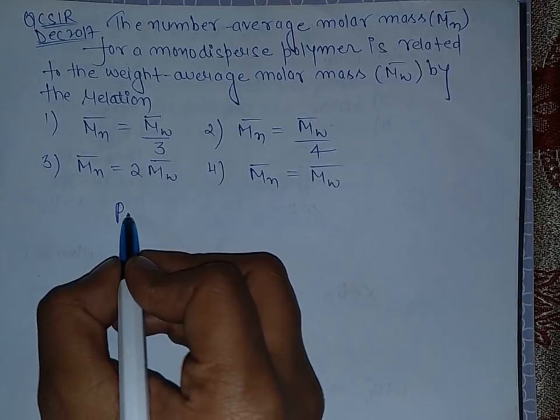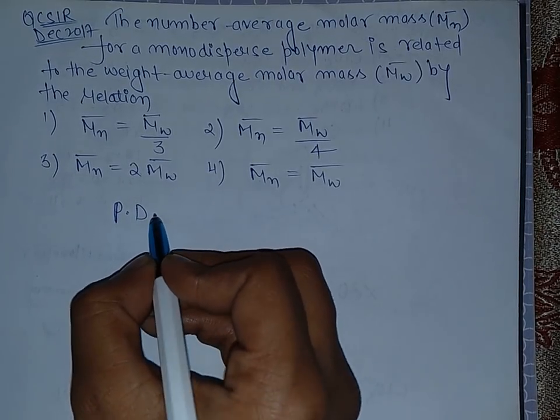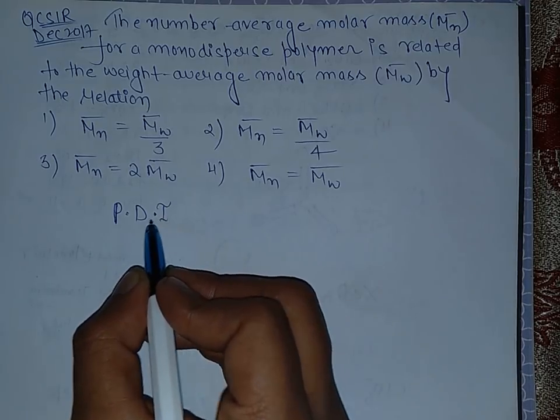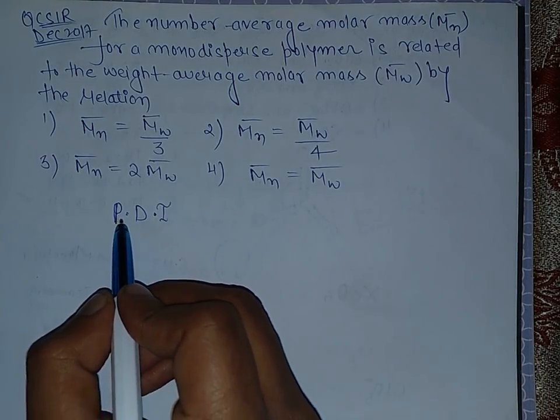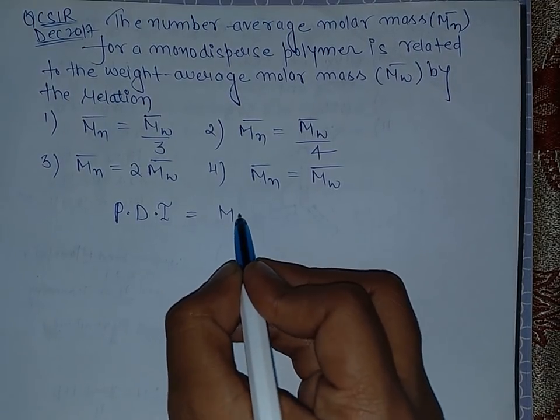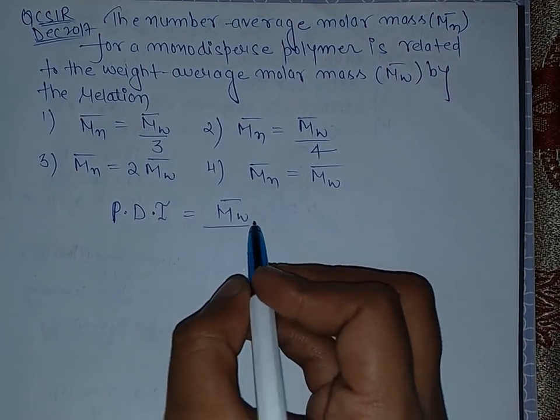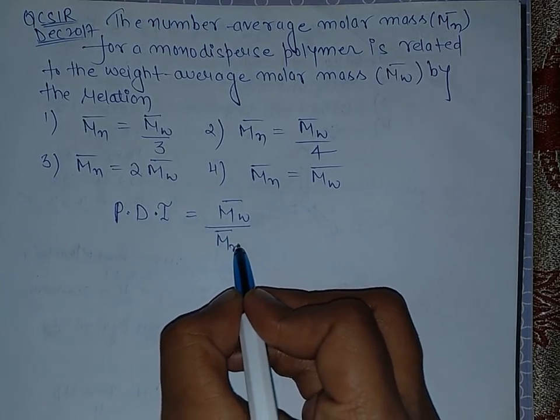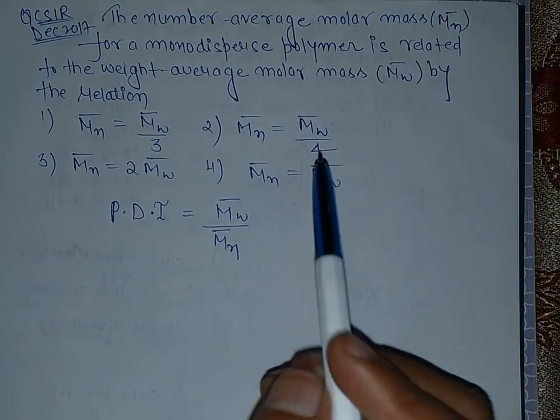There is one formula: PDI, this is known as polydispersity index. This equals to the weight average molar mass divided by number average molar mass.